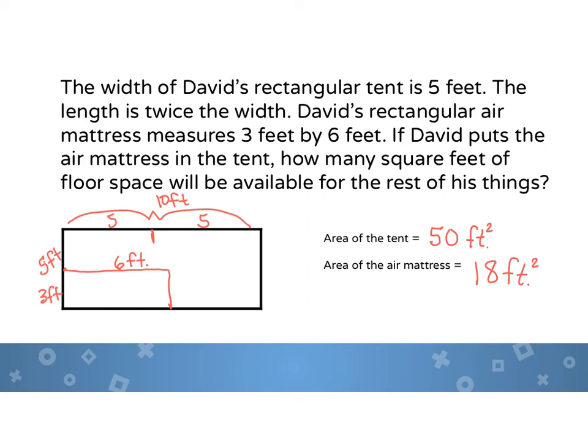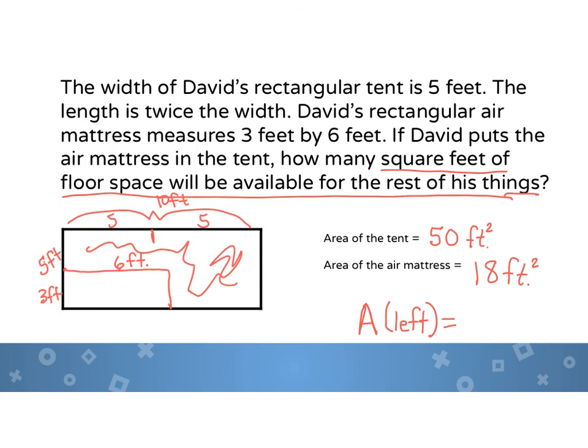So now that I know the area of both the tent and the air mattress, I need to just subtract the air mattress from the tent and then I'll know how much space that I have all in here that's left over. And so our question is, how many square feet of floor space will be available for the rest of his things? So pause the video for just a minute and see if you can subtract, you have 50 square feet, subtract 18 square feet and see what you get for the area left over. Okay, so if you take 50, subtract 18 and you're going to have 32, 32 what? Square feet left, area left in the tent for him to put his things like his backpack or his food, whatever he needs to store in his tent.